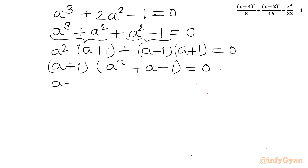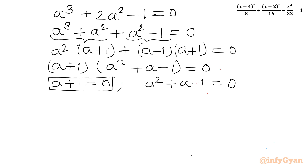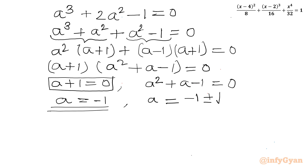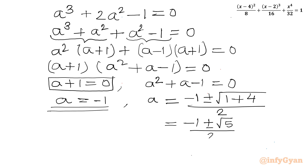For the quadratic factor a² + a - 1 = 0, I apply the quadratic formula: a = (-1 ± √(1 + 4)) / 2 = (-1 ± √5) / 2. So the two solutions are a = (-1 + √5) / 2 and a = (-1 - √5) / 2.